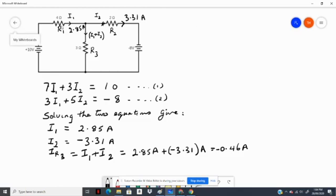Which means that the current through R3 is opposite to the assumed direction. So the current through R3 is not in this direction, but it is in this direction, at a value of 0.46 amps.